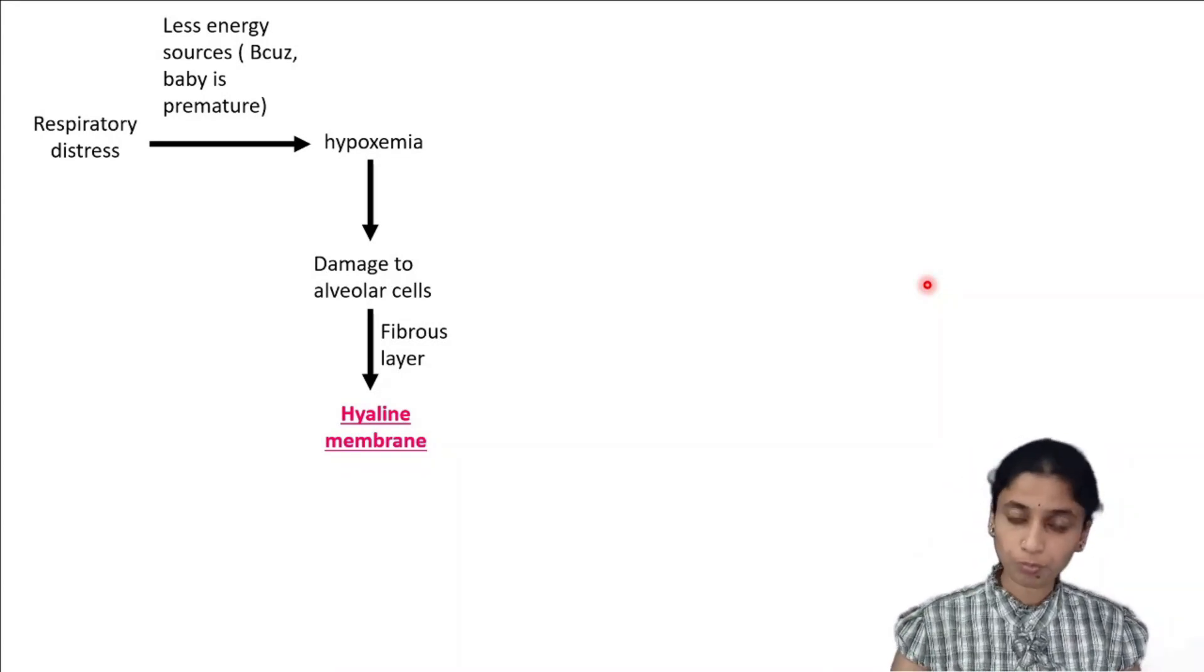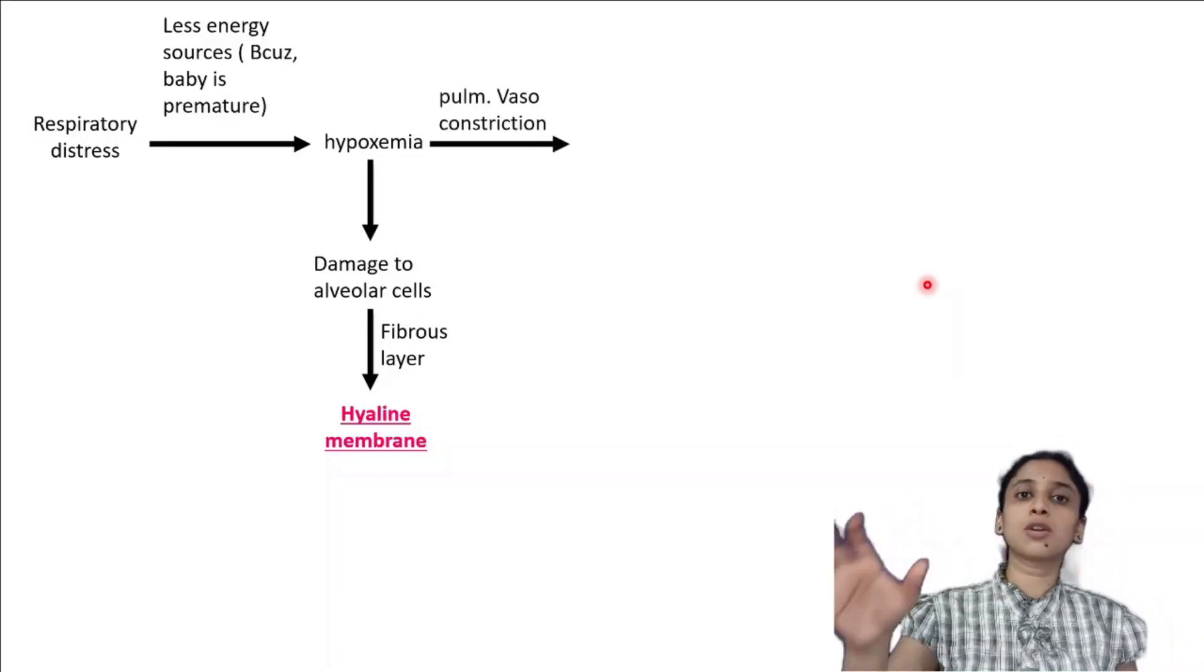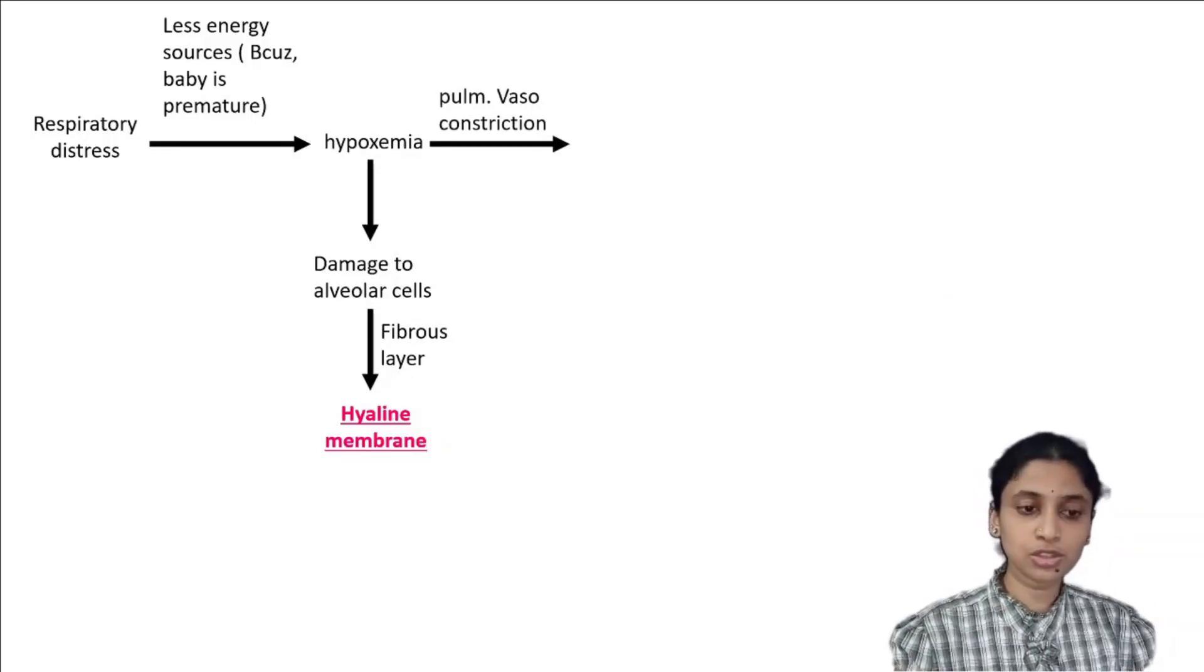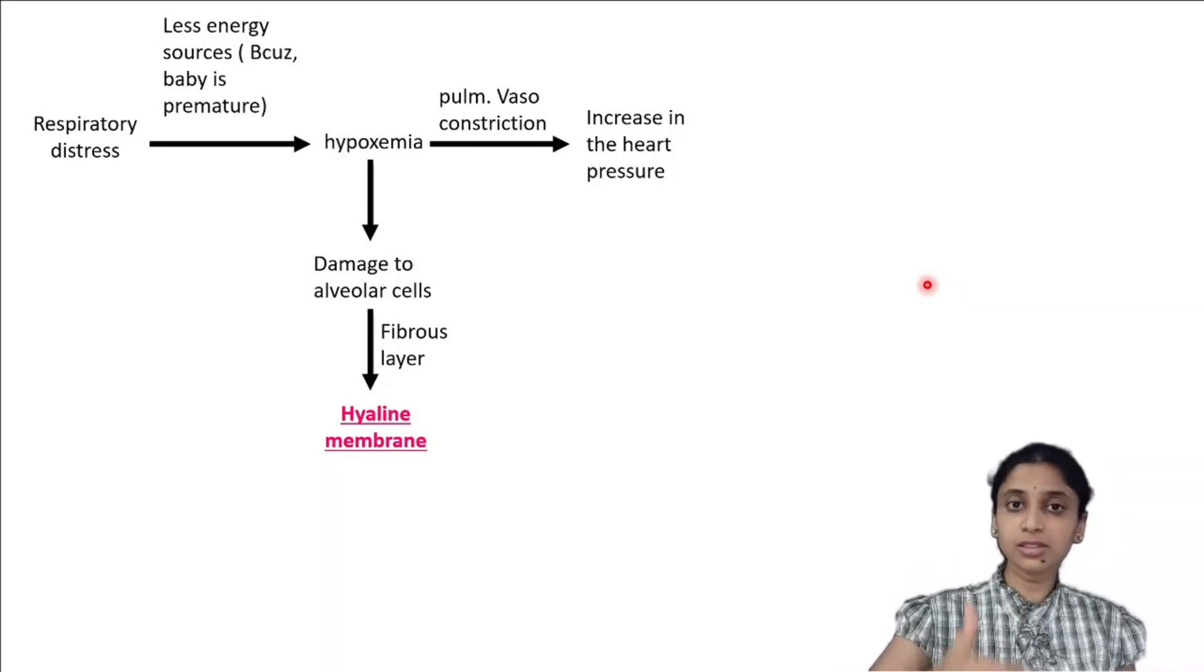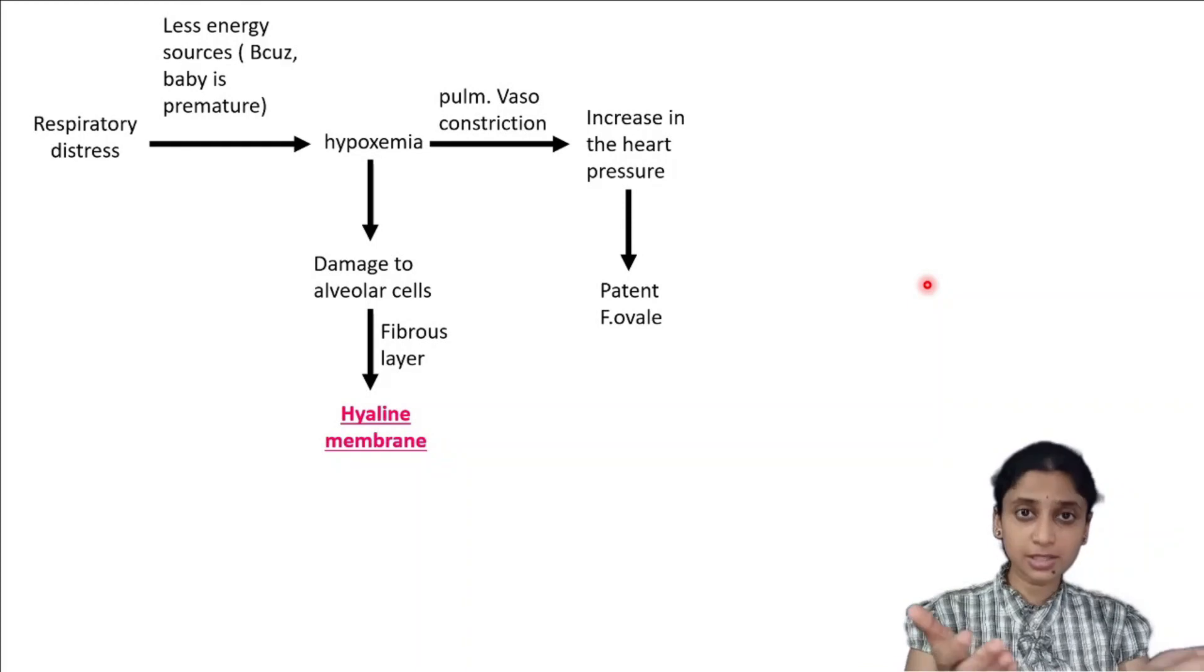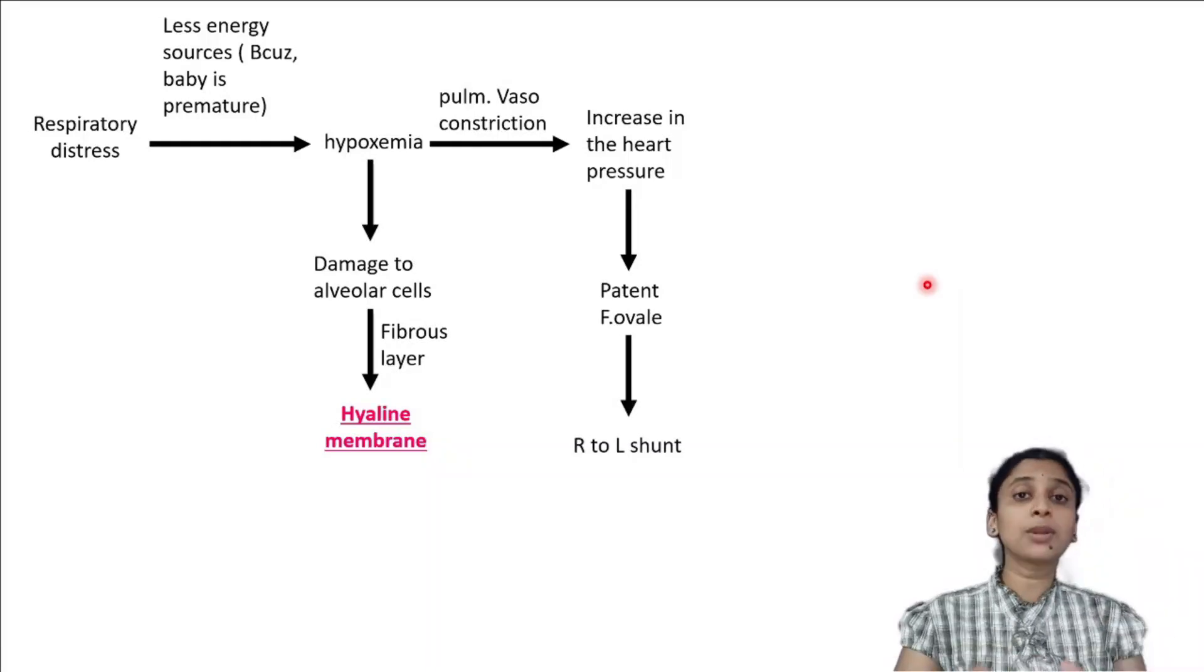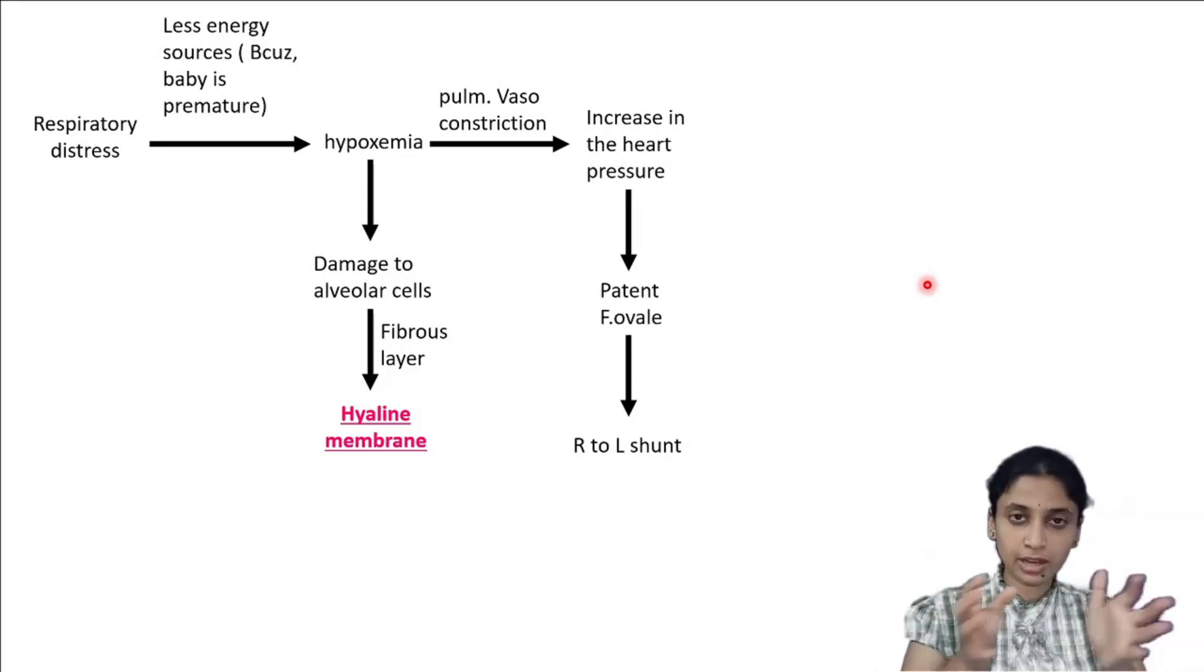The story did not end here. Hypoxemia can also result in vasoconstriction in the pulmonary circulation. Hypoxemia causes pulmonary vasoconstriction, and this increases the pressure in the heart. We have to remember that this child is premature. In prematurity it is having patent foramen ovale, and patent foramen ovale causes right to left shunt.